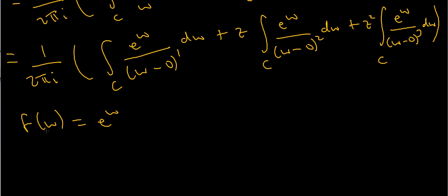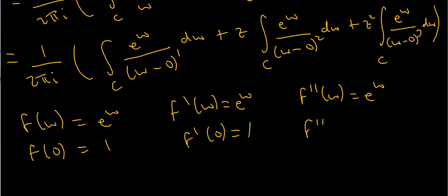Let's compute these derivatives. f of w is e to the w. If I differentiate the exponential function, I'll just get the same thing back. So f prime of w is again e to the w, and f double prime of w is e to the w. I've got to evaluate each of these things at the point w equals 0. So this is just f of 0, which is 1. Likewise, f prime of 0 is 1, and f double prime of 0 equals 1.